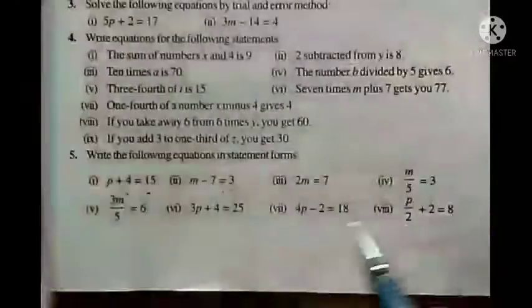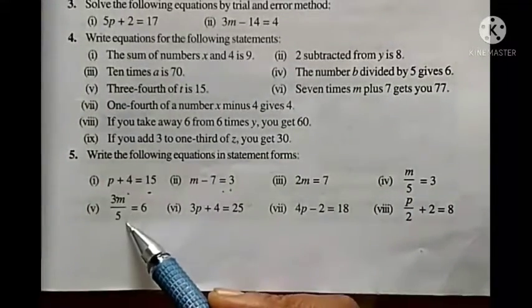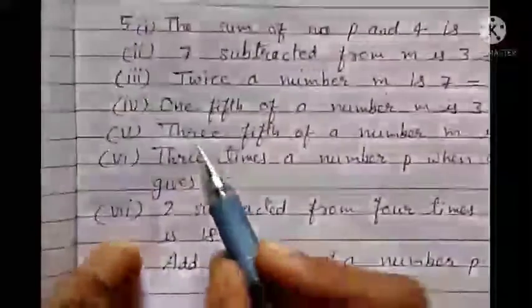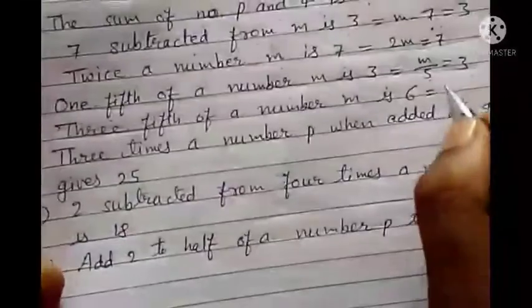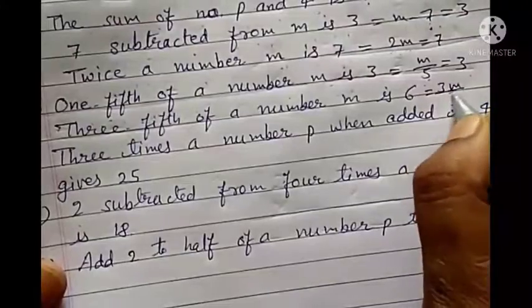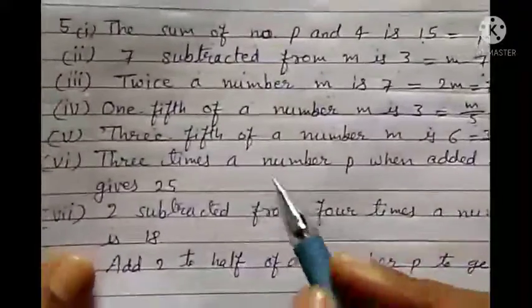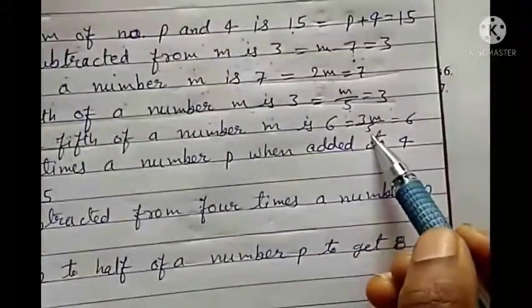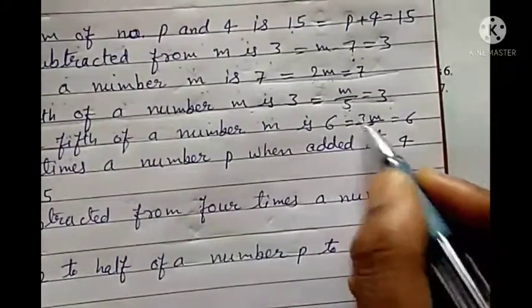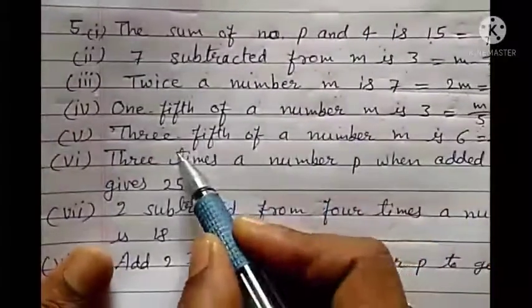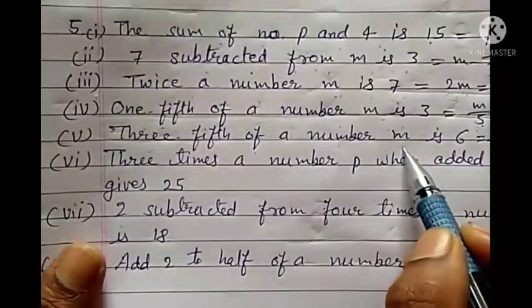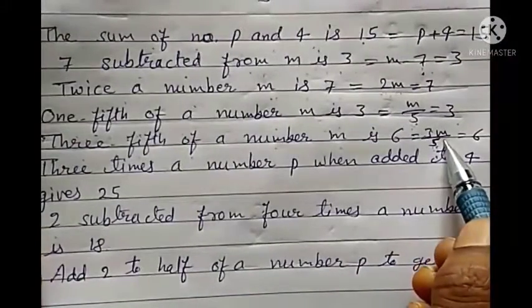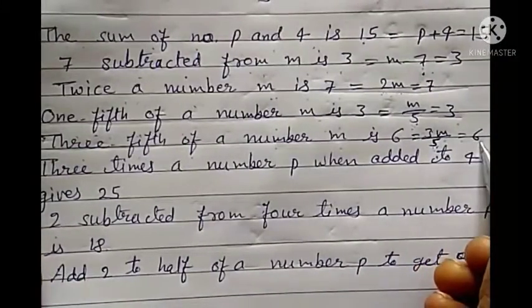Fifth (labeled as sixth): 3m upon 5 equals to 6. This means three upon 5 with m, so three-fifth of a number m. The statement is: three-fifth of a number m is 6.